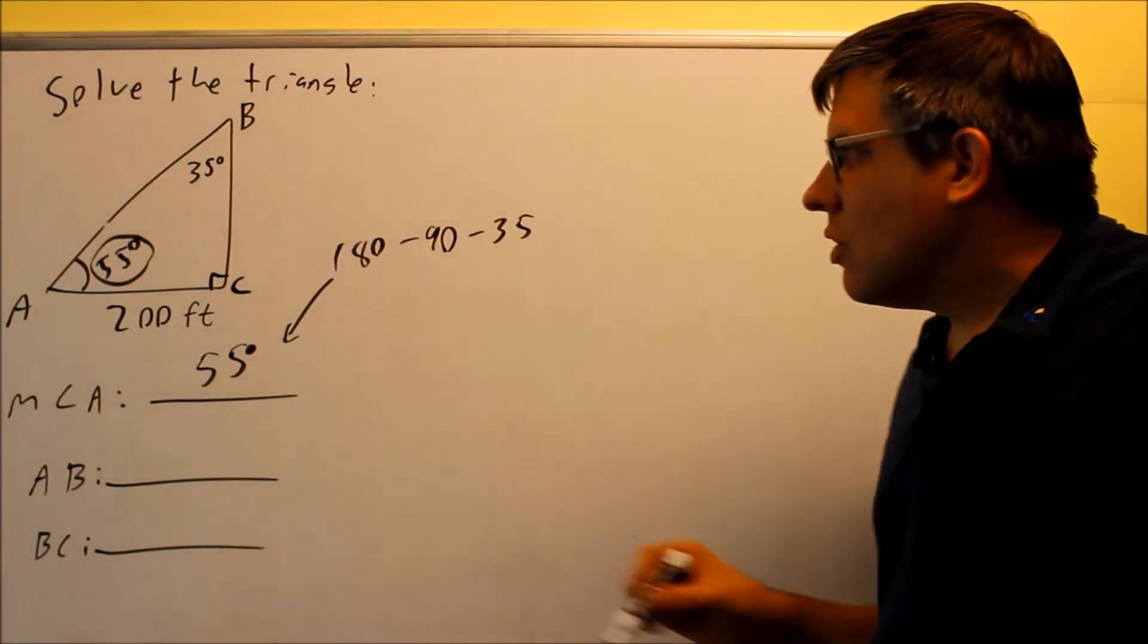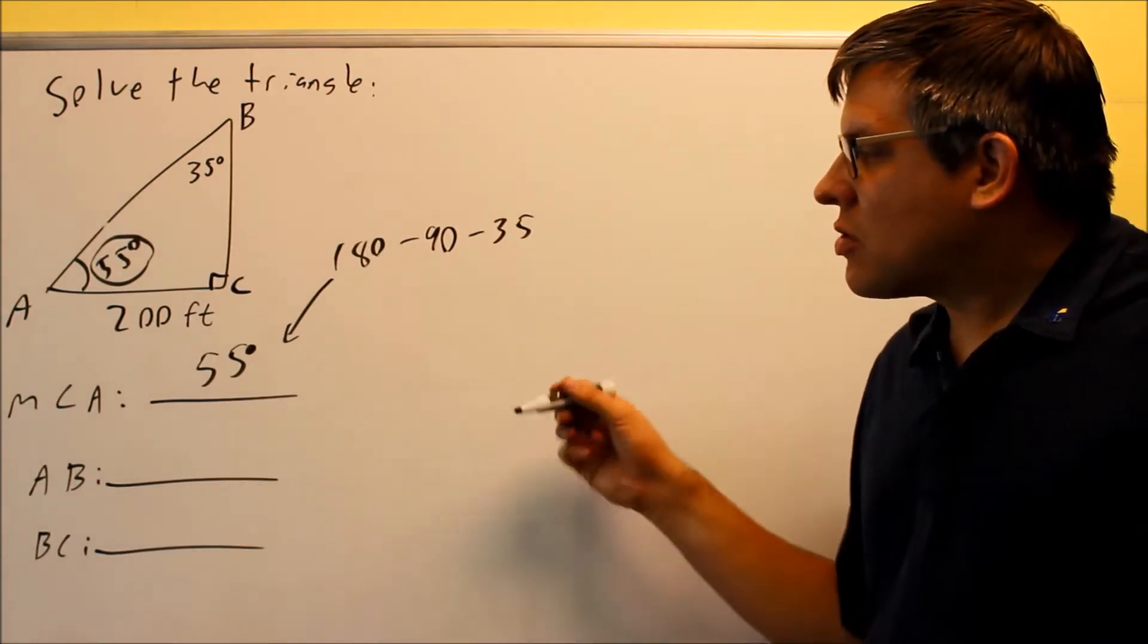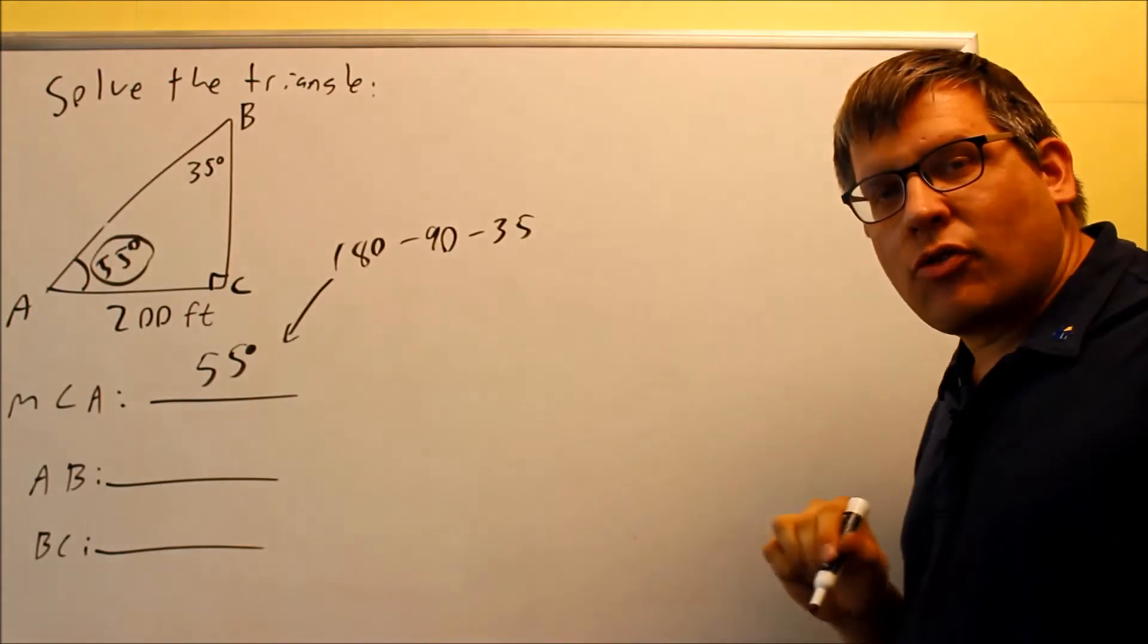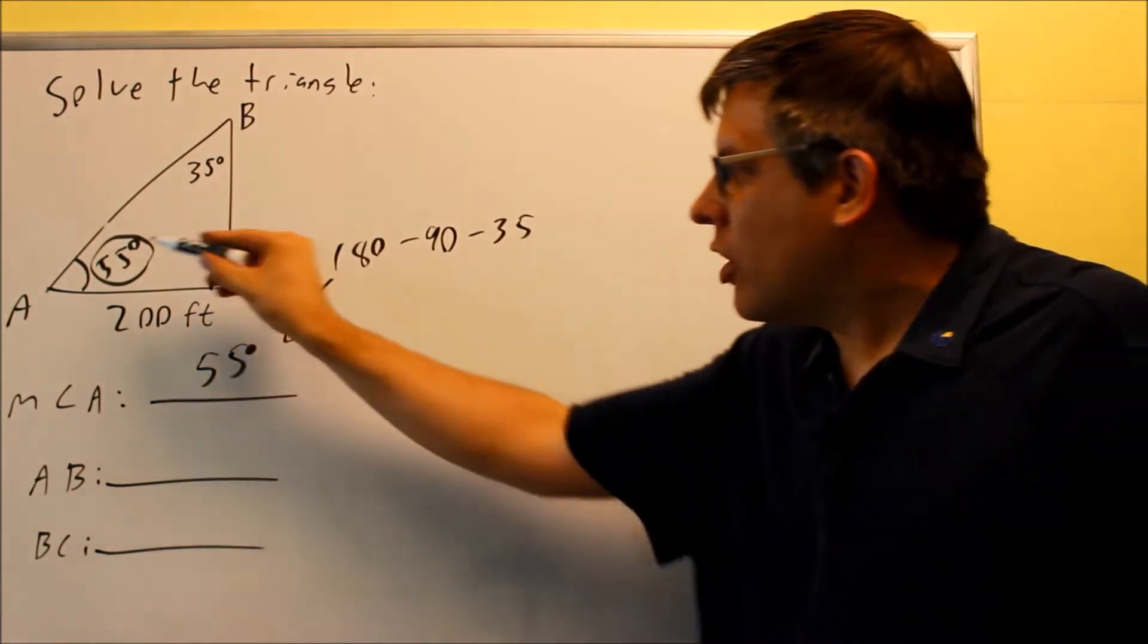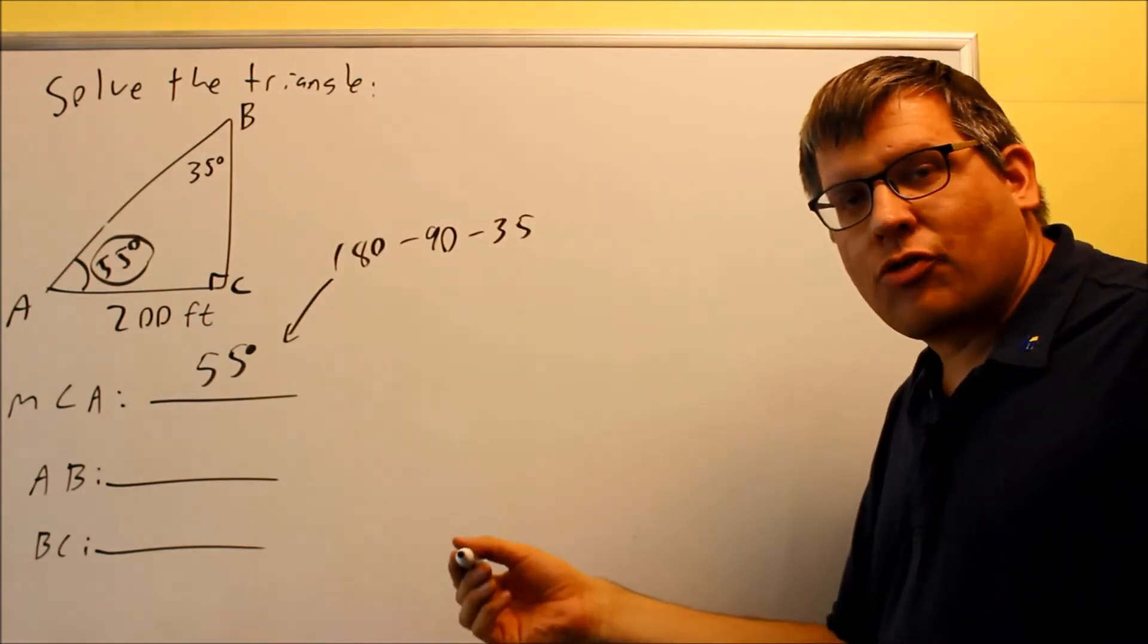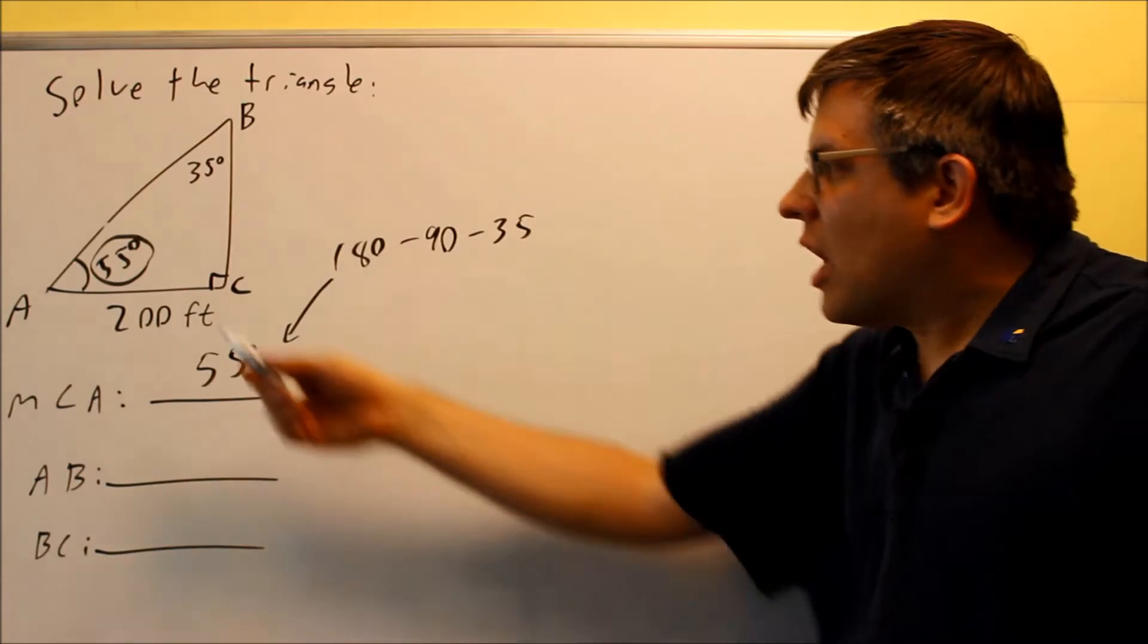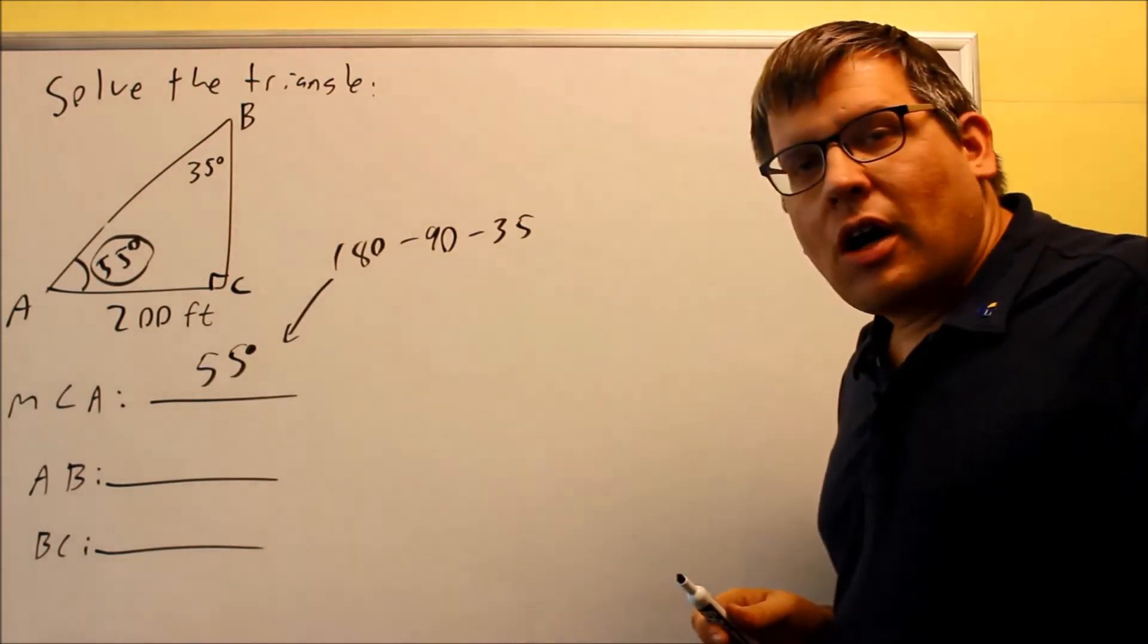Now to find these sides, we need to use a trig definition to set this up and solve for the missing side. It does make a difference which angle you use because depending on which one you pick, your opposite and adjacent sides depend on what angle we're using. In the notes I did the problems working with 35, so instead I'm going to show you working with 55 degrees. You can still do that and you'll get the same answer.